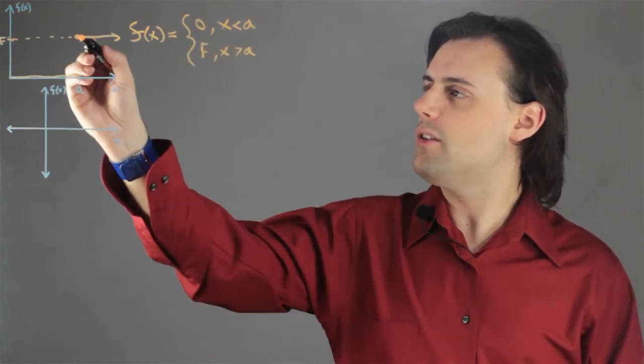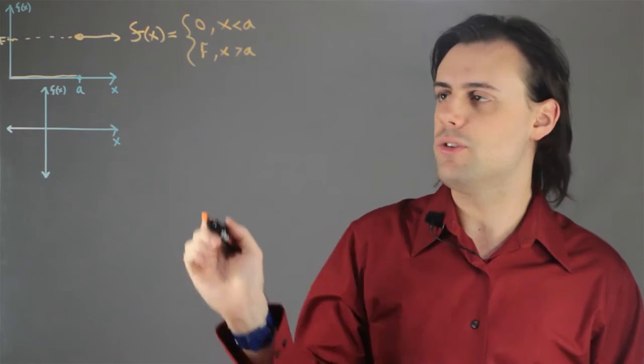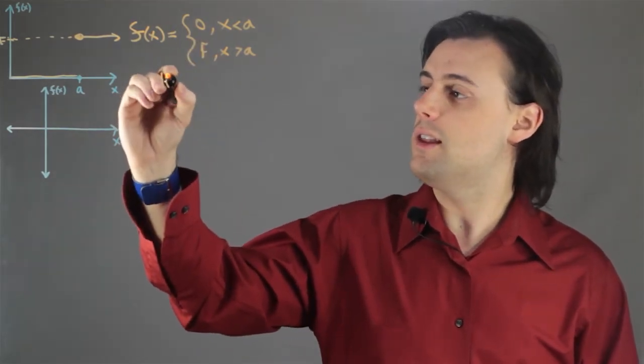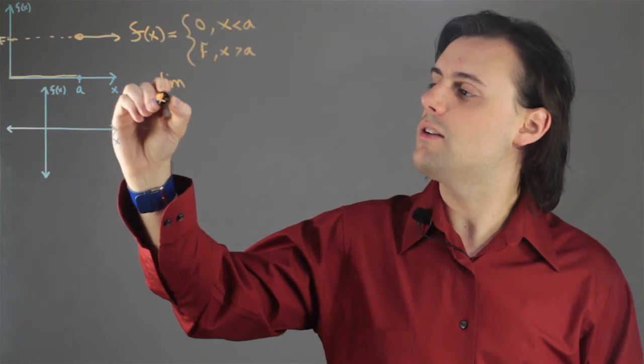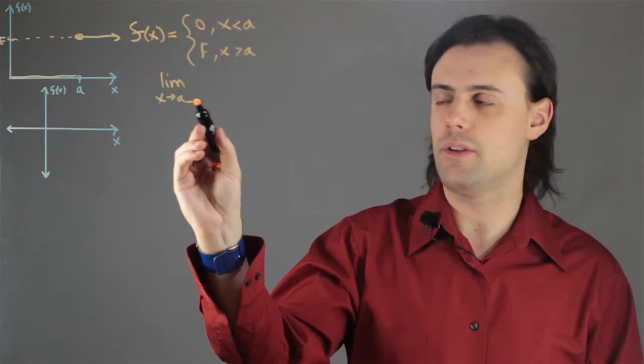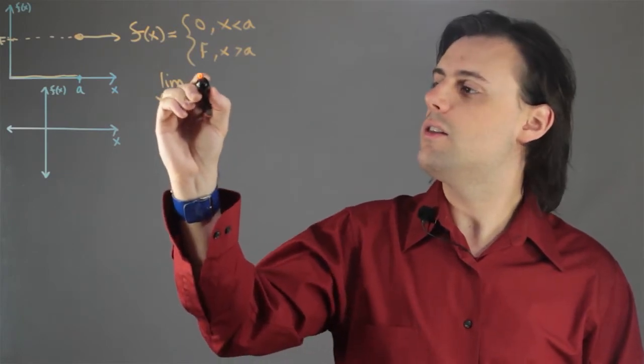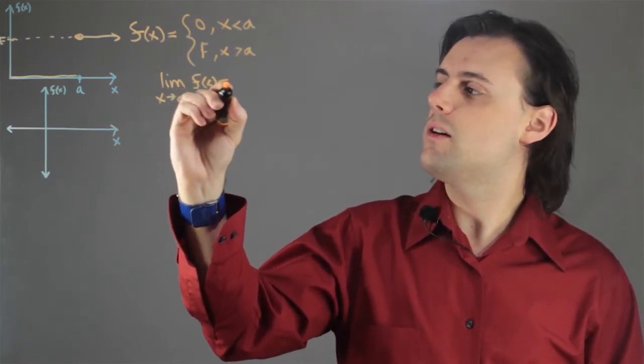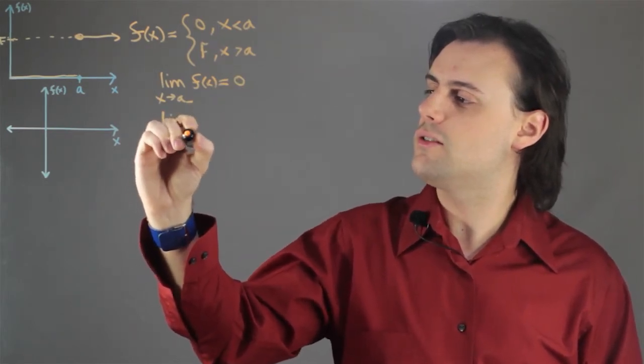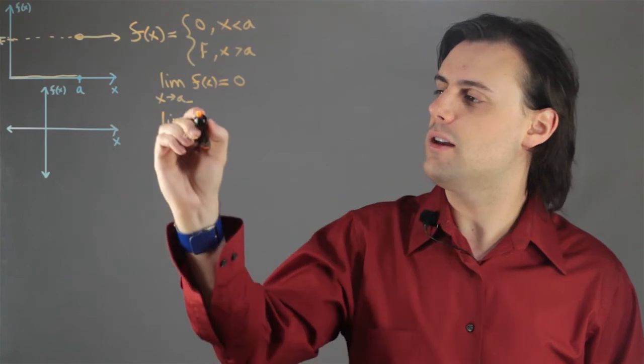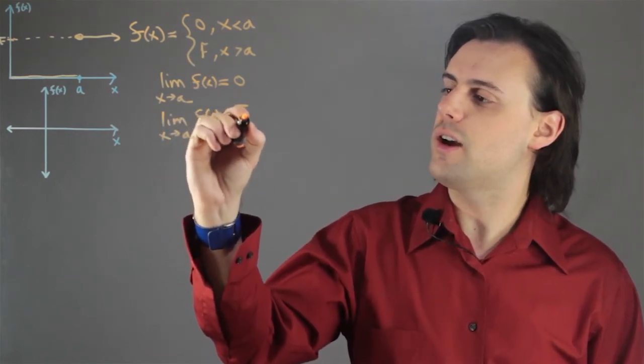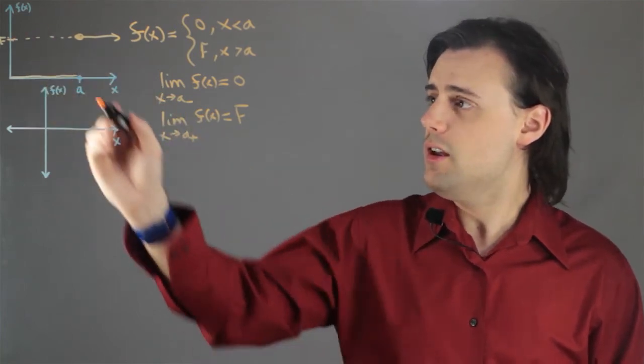But we want to understand what happens when the function is equal to a. So in the limit as x approaches a from the left-hand side, that's why I put this little negative, the limit of the function is equal to 0, but then the limit of the function as x approaches a from the positive side will be equal to capital F, this value here.